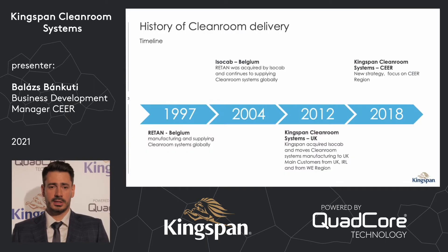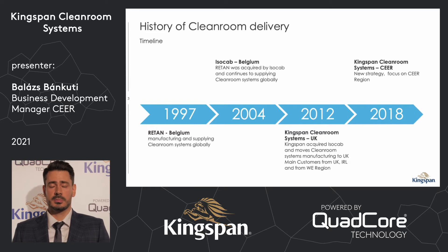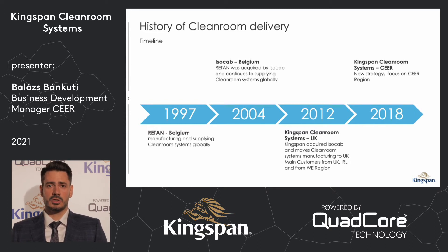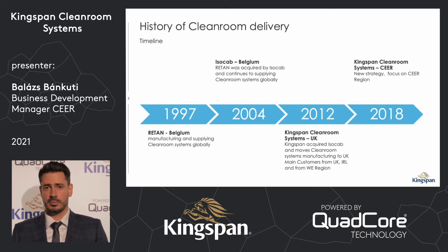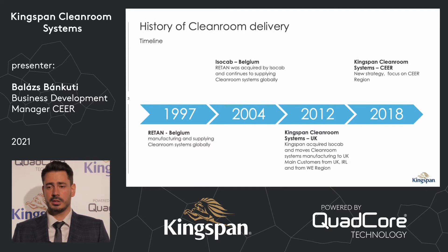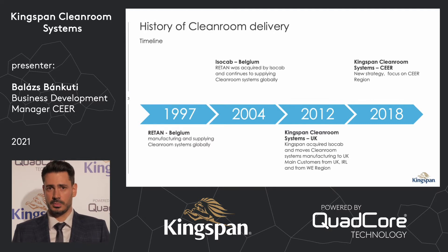Let's start with the timeline. The Kingspan Cleanroom systems was started in 2012 through an acquisition from ISOCAB. After the acquisition we moved the production to the UK, where we started to manufacture and develop our goods. In 2018 we started the business development in the Central and Eastern European region.